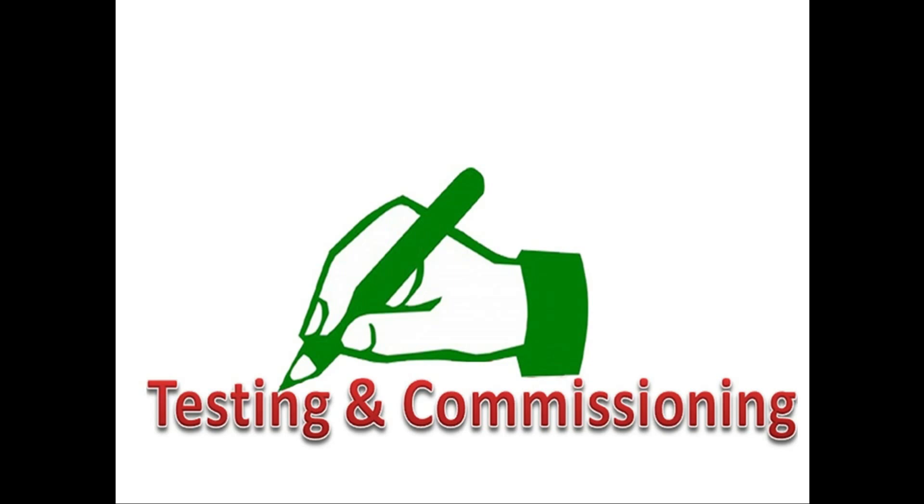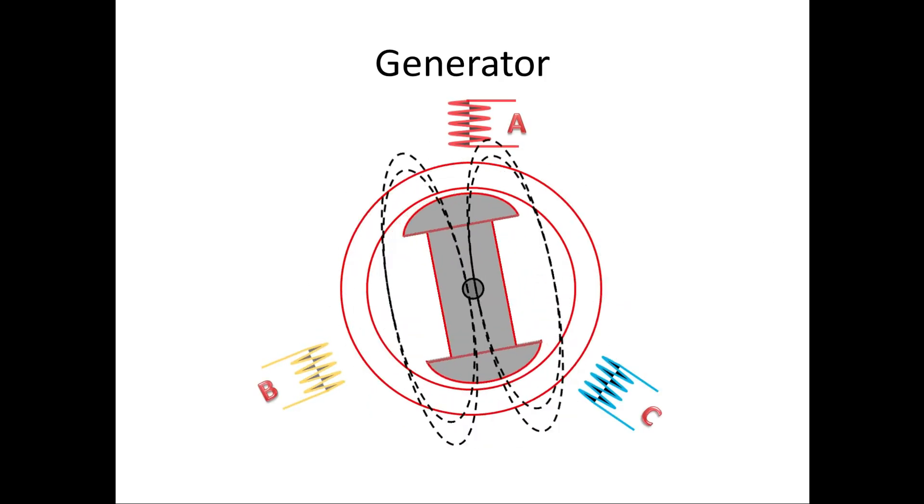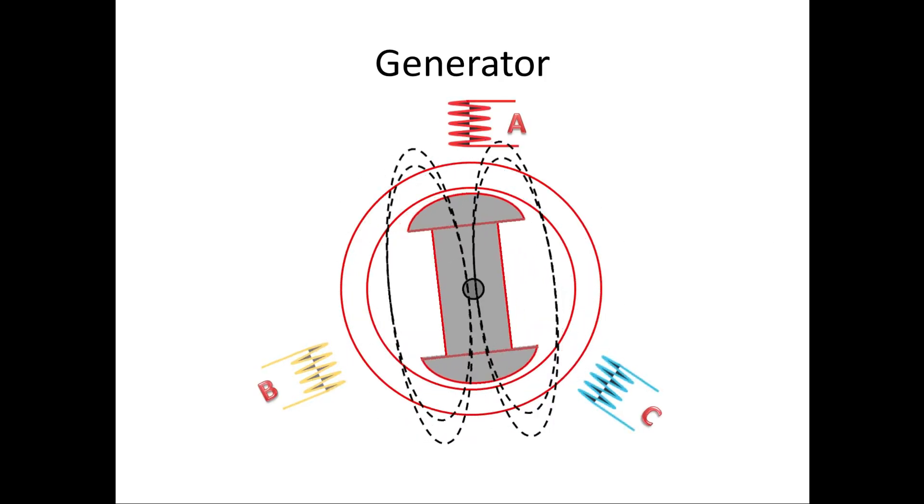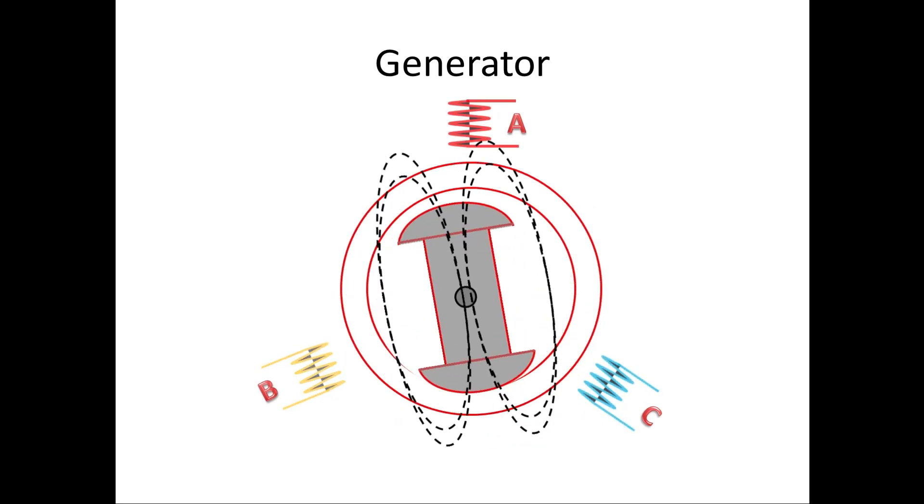On generator normally we consider two big parts. One is Stator and other one is Rotor. All synchronized generators have the input as Rotor which produces change in magnetic field with the help of turbine and exciter. From the Stator the output power is taken depending on rotor speed and magnetic field. So Rotor is very important in generator.